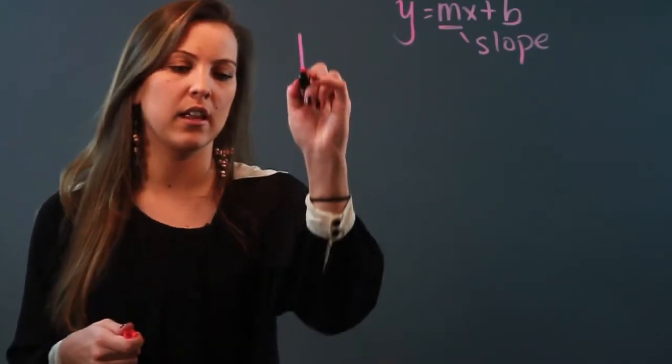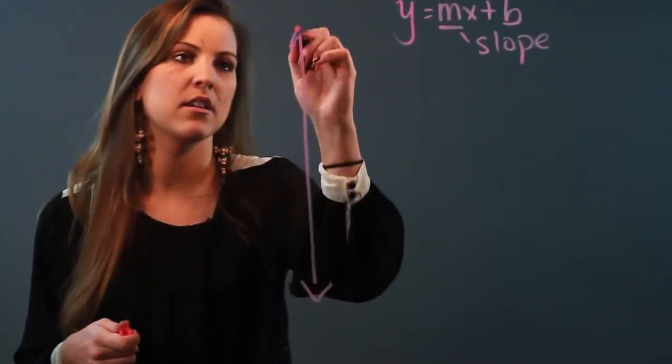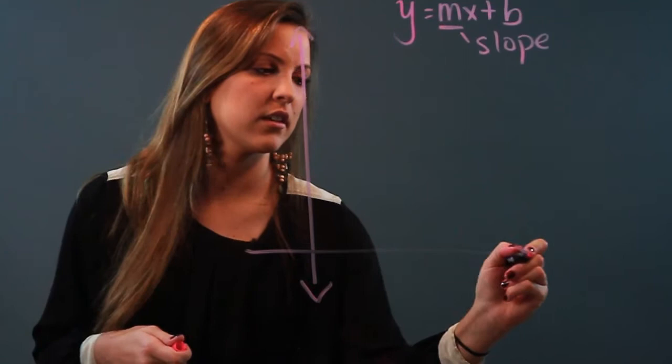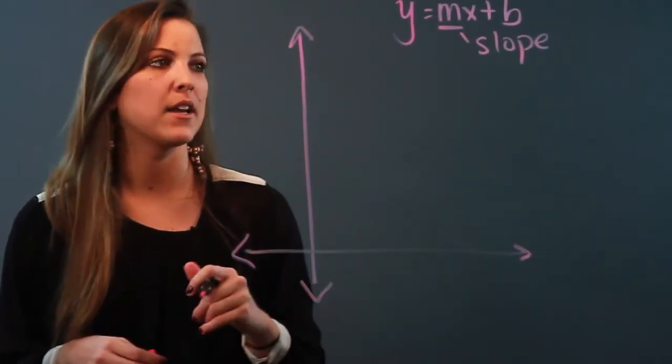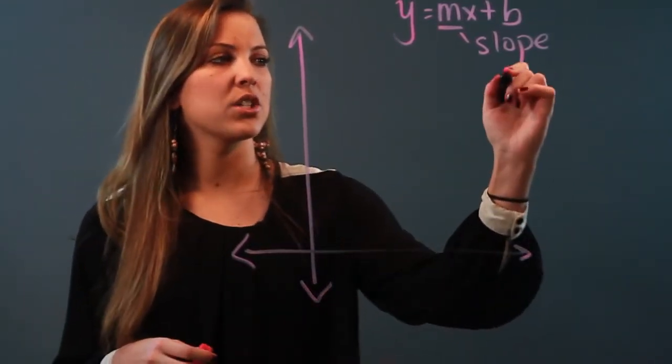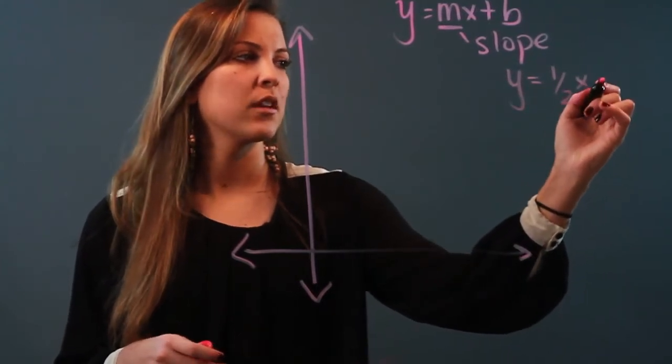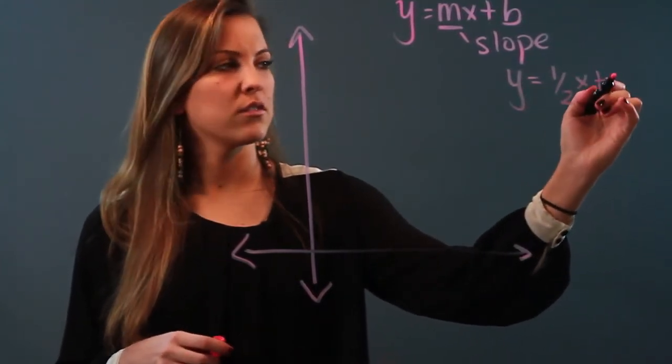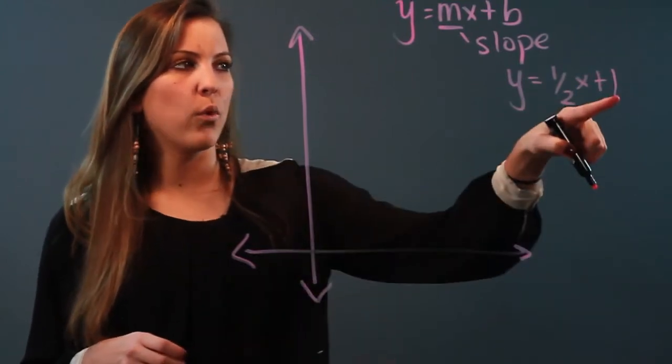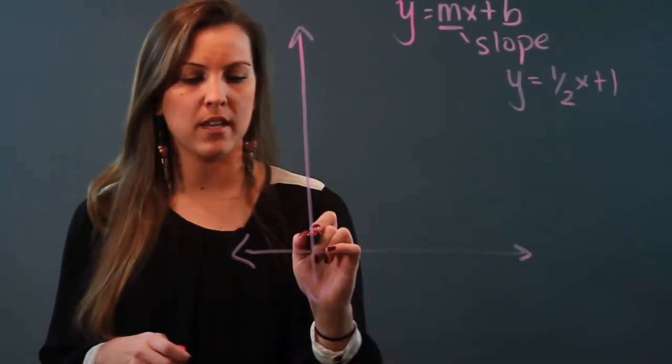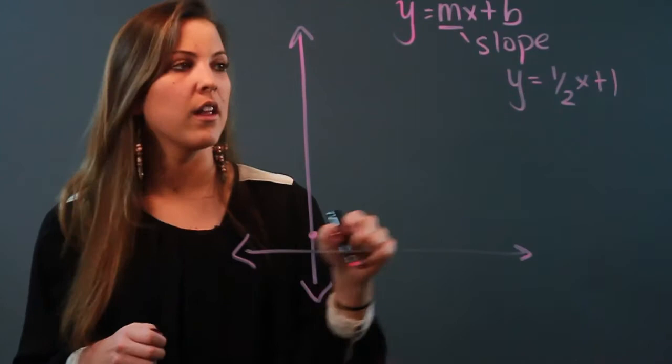we'll examine what their lines look like and what the slope does. Let's look at quadrant one so we can look at the positives. If I gave you the equation y equals one-half x plus one, one is my y-intercept, so that's where my line is going to start and my slope